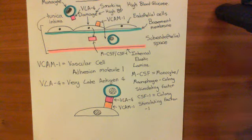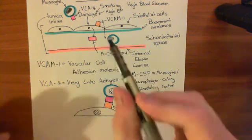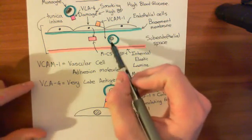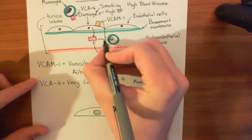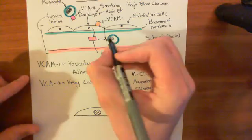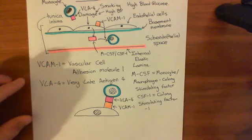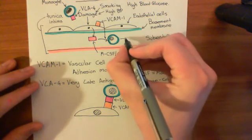But in addition, it also has another role. It has the role of turning monocytes which have moved out of the bloodstream into macrophages. So what it's going to do is it's going to work on this monocyte here that has moved into the subendothelial space, and it's going to cause it to become a macrophage.